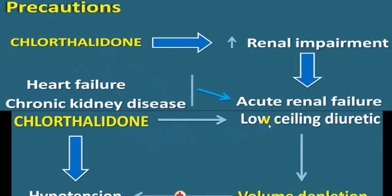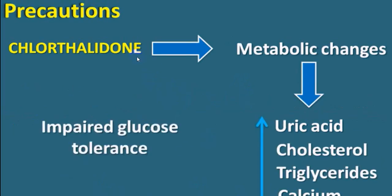Although it is a low-ceiling diuretic, at larger doses chlorthalidone can produce volume depletion, which can precipitate hypotension. Secondary to hypotension, it can precipitate acute kidney injury and worsen CKD.